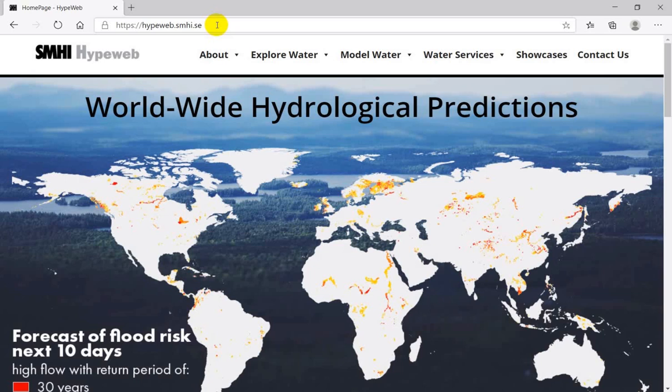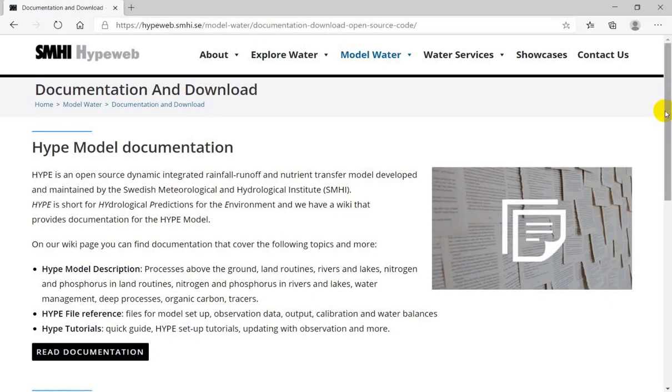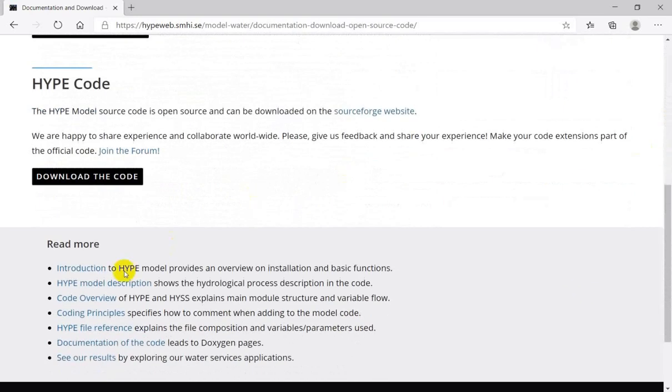Back at the HYPE website. An overview of the code structure is also given in this document that can be downloaded here. You go to model water, documentation and download, and then scroll to the bottom of the page. Here is the code overview document.